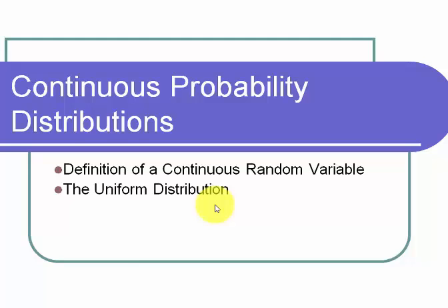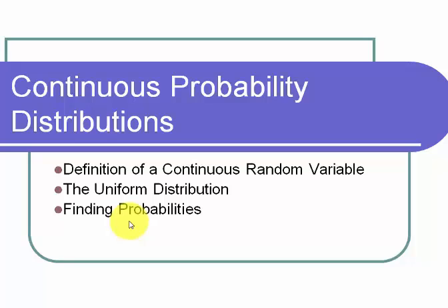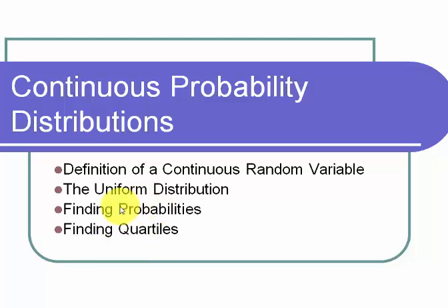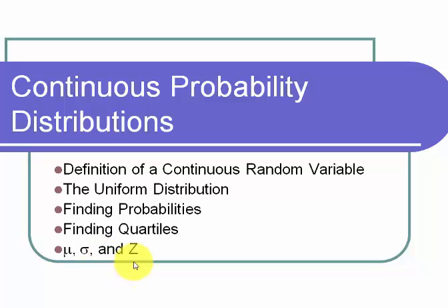After going over the uniform distribution, we'll look at probabilities that involve it. Then we'll move on to finding quartiles — the first or the third quartile — or a percentile in general if we know a variable follows a uniform distribution. Finally, we'll go over the mean and standard deviation, and use those to find the z-score when a continuous random variable follows a uniform distribution.